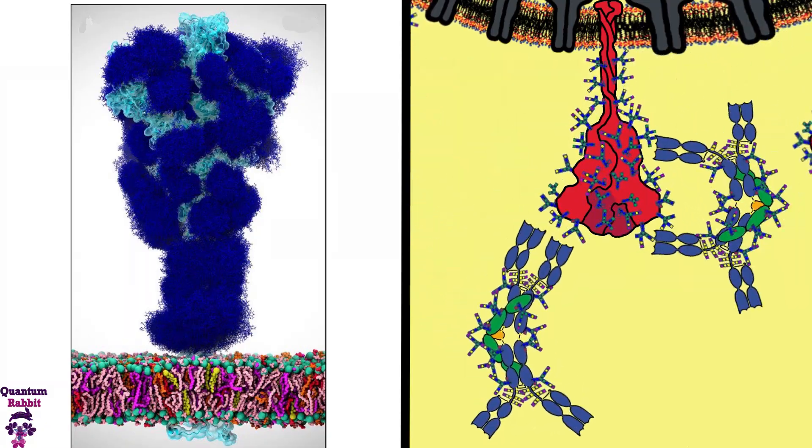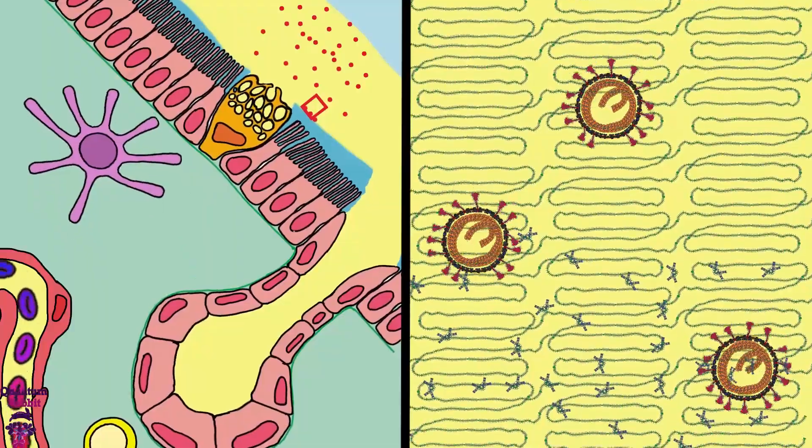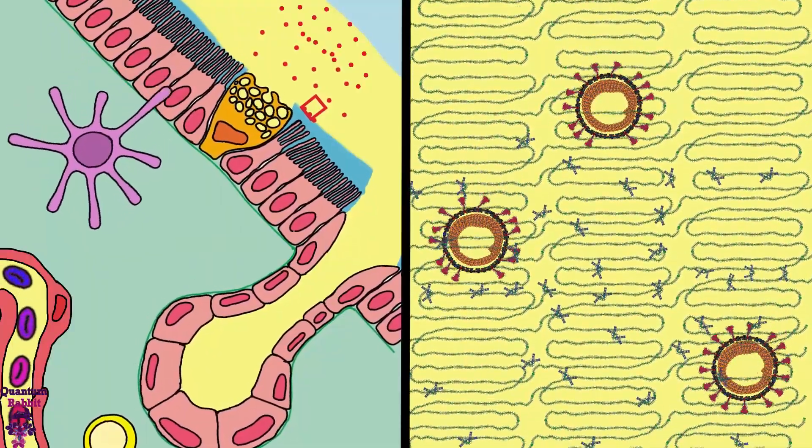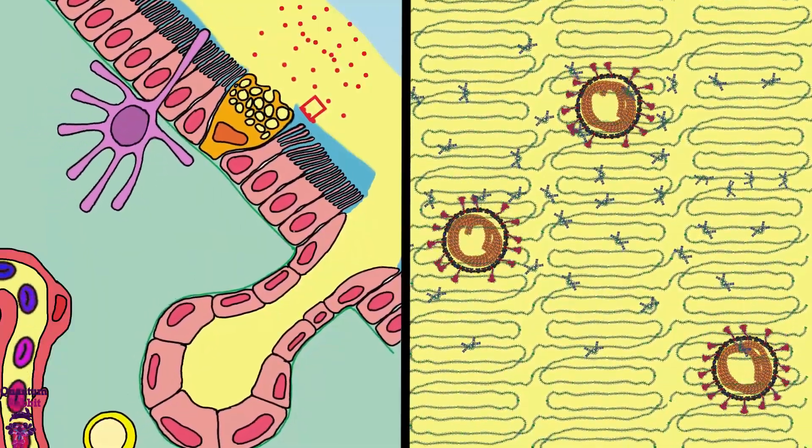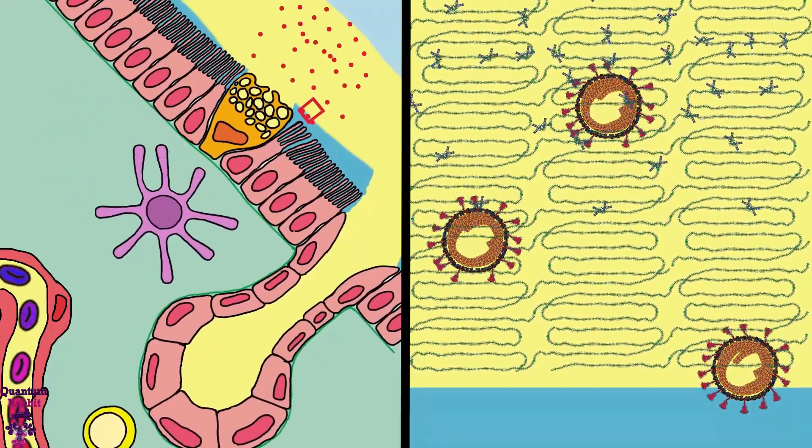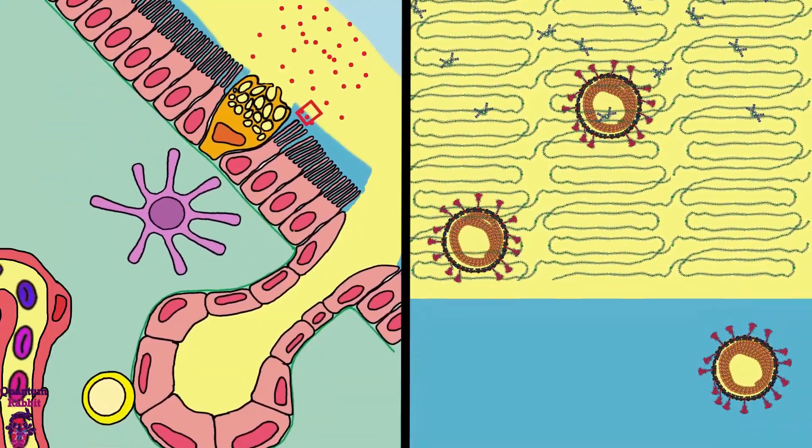Despite all these defenses, certain virions manage to survive the innate defenses of the mucosa and reach a less hostile second layer of mucus. Now the virions are about to interact with the cells of the nasal epithelium in search of receptors that help it fuse its membrane with that of the cell.